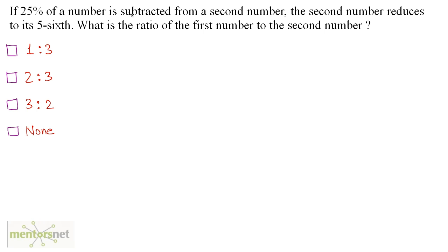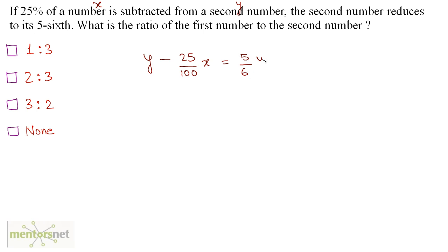Let the first number be x and the second number be y. Let's see what is given: 25 percent of a number is subtracted from a second number. So we have y, the second number, minus 25 percent of the first number — that is y minus 25 upon 100 times x. This equals the second number reduced to its 5/6, so 5 by 6 of y.